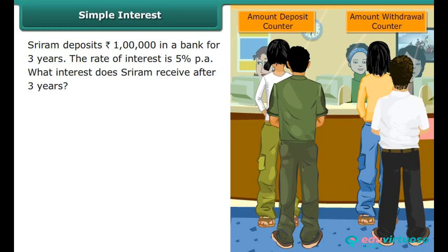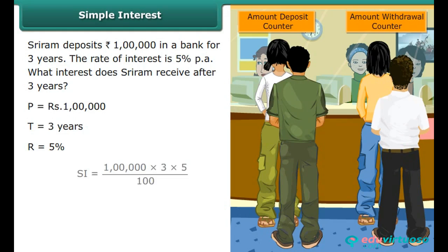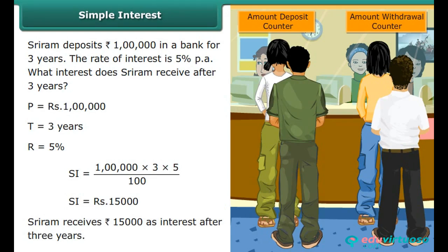Example: Sriram deposits Rs. 1,00,000 in a bank for 3 years at a rate of interest of 5% per annum. SI = (1,00,000 × 3 × 5) / 100 = Rs. 15,000. Sriram receives Rs. 15,000 as interest after 3 years.